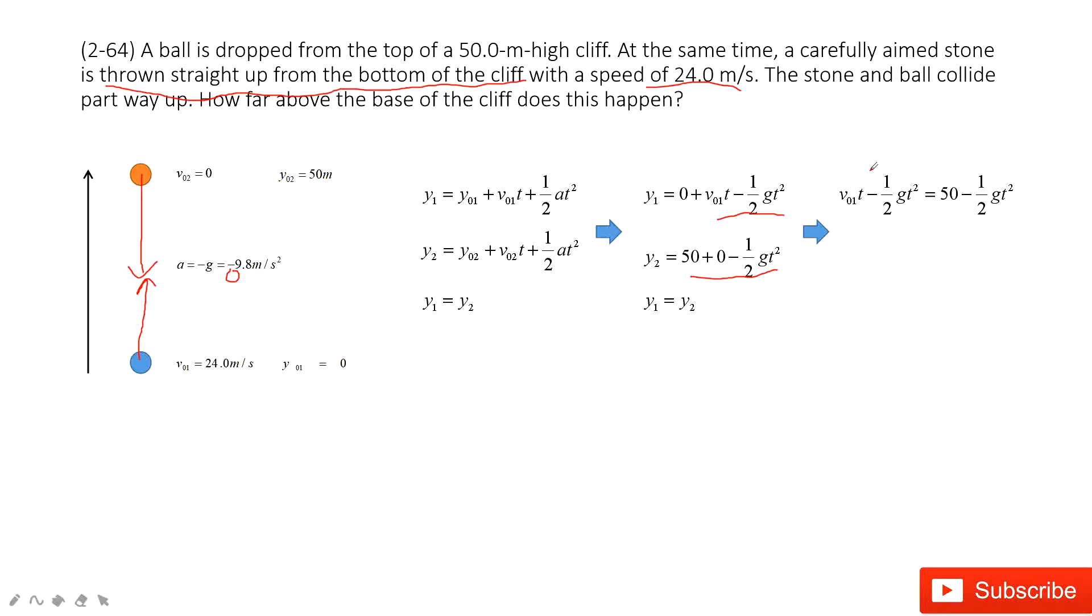Cancelled. So we get v0 t equals 50. So then t equals 2.1 seconds.